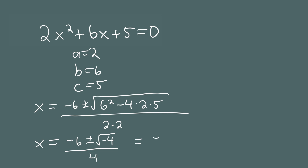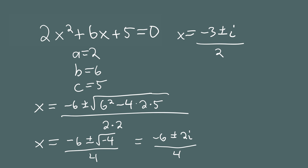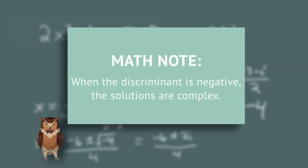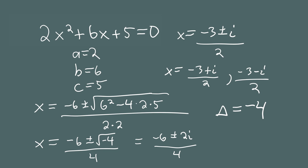This gives us negative 6 plus or minus 2i over 4. Dividing the top and bottom by 2, the two solutions to this equation are x equals negative 3 plus or minus i over 2. Breaking into two complex numbers: negative 3 plus i over 2, and negative 3 minus i over 2. So these are the two solutions, and they're both complex numbers. In this case, the discriminant is negative 4. The takeaway: when the discriminant is negative, the two solutions are going to be complex numbers.